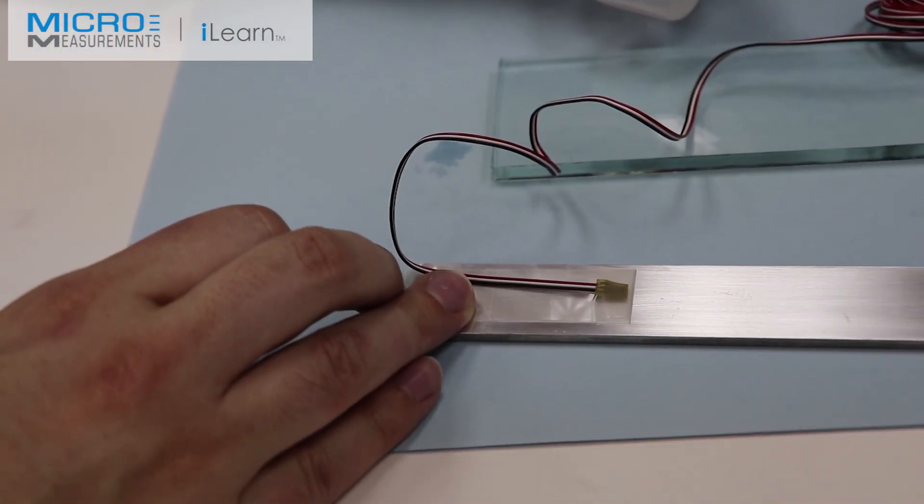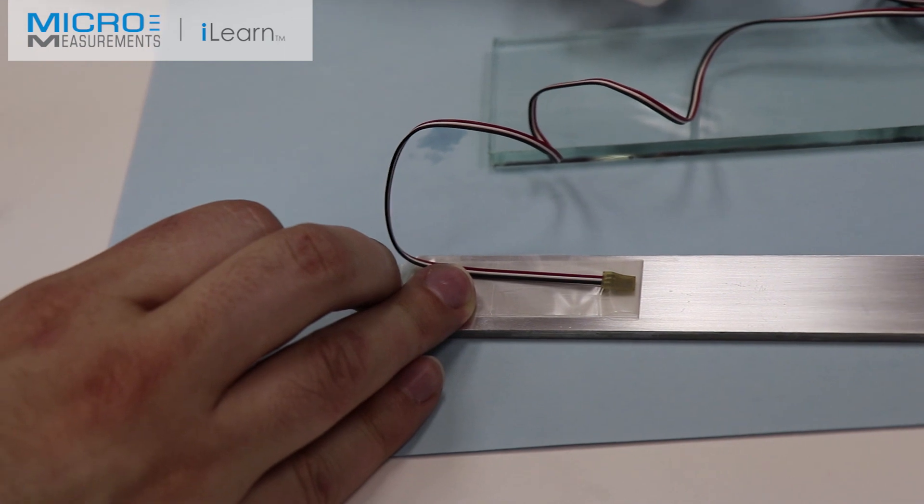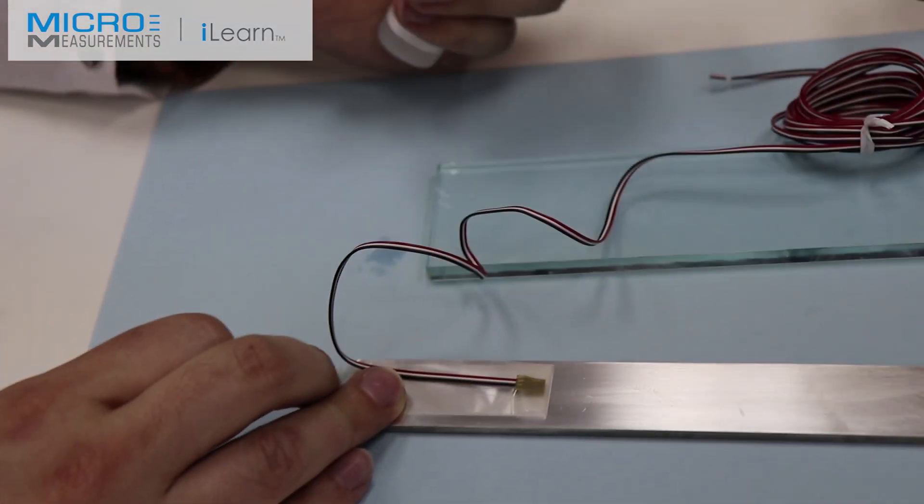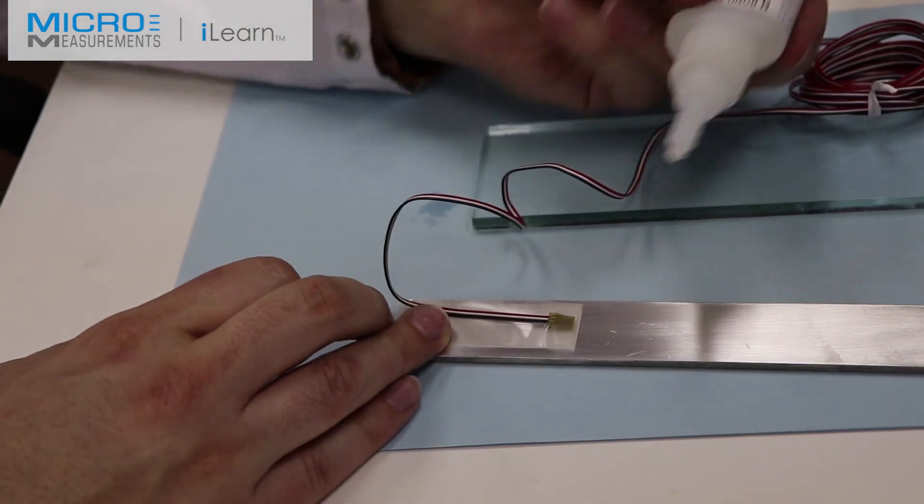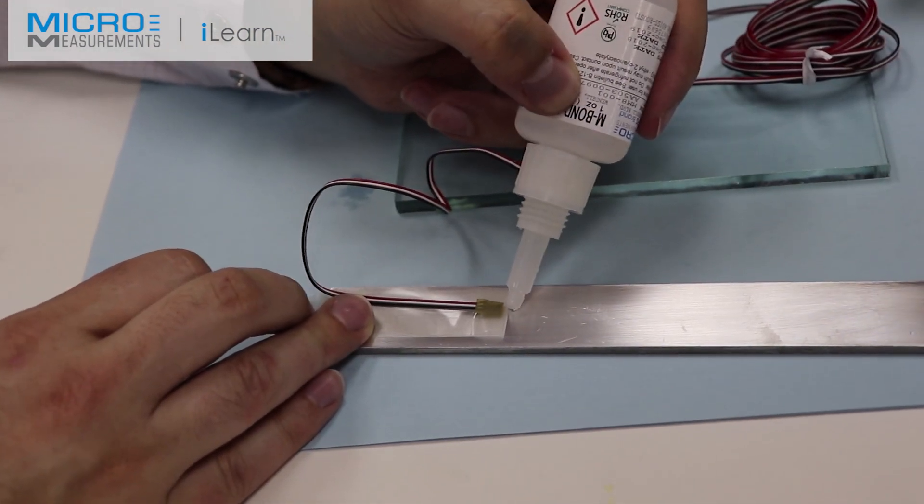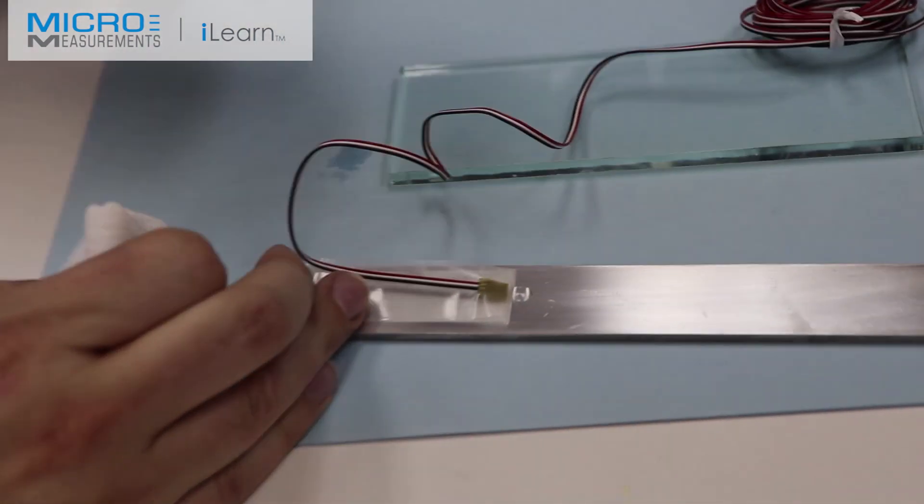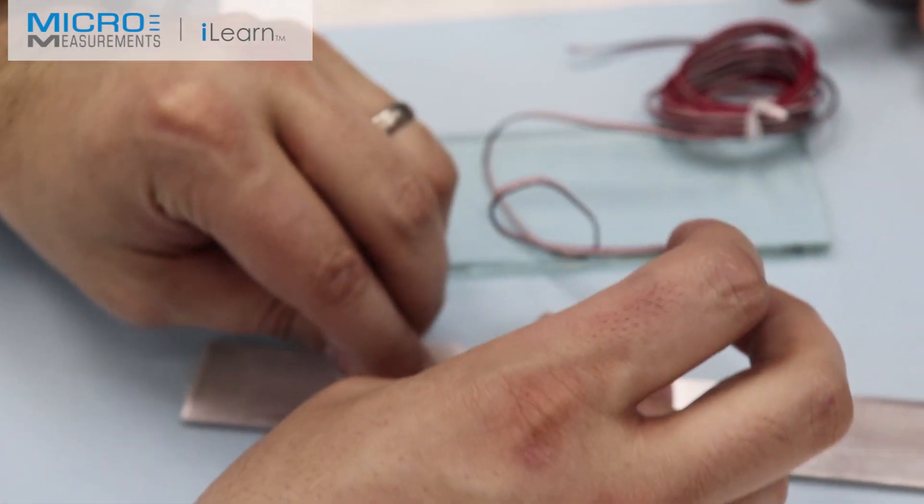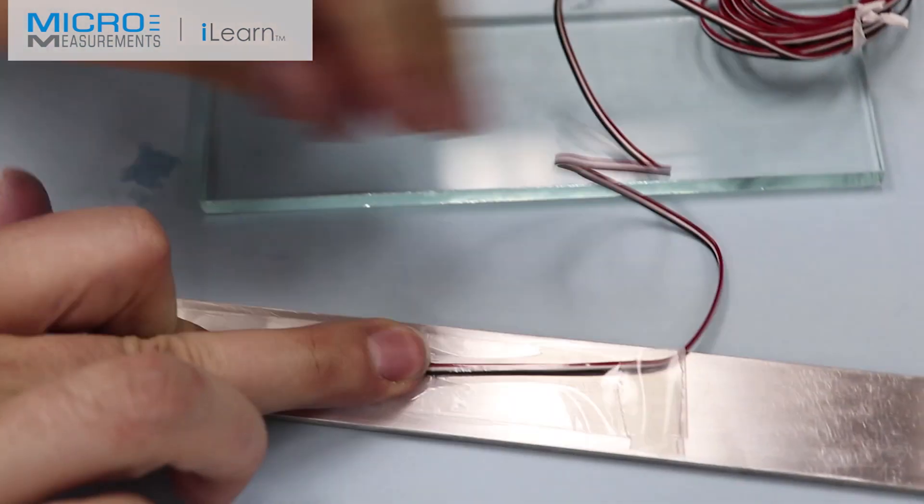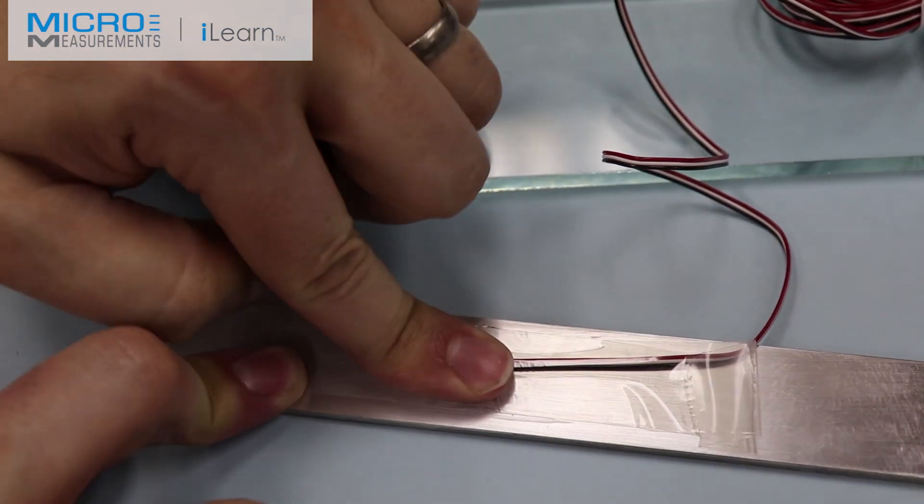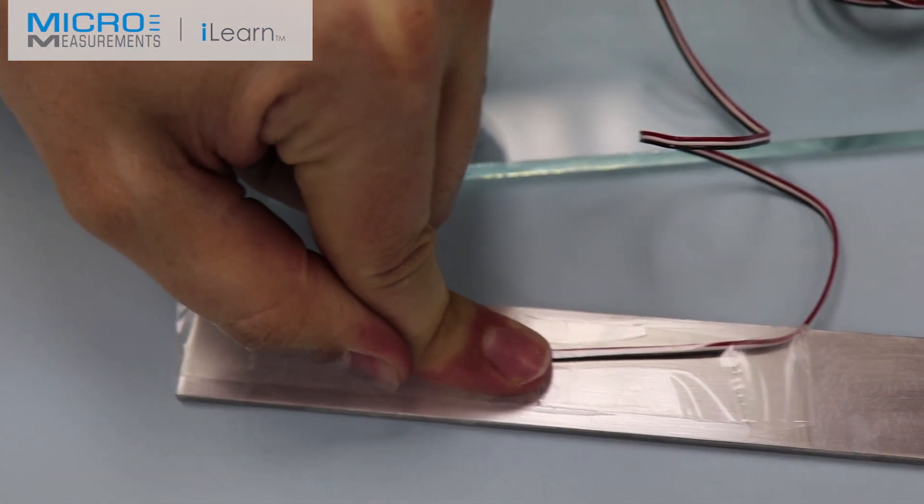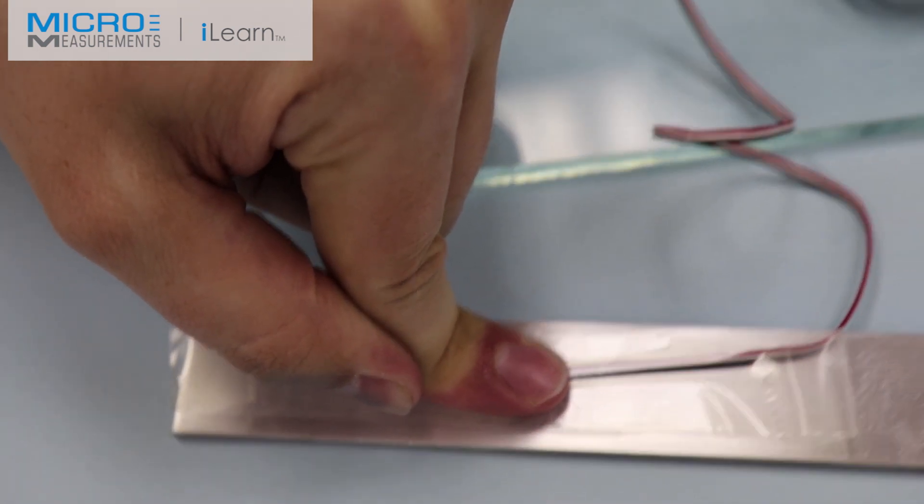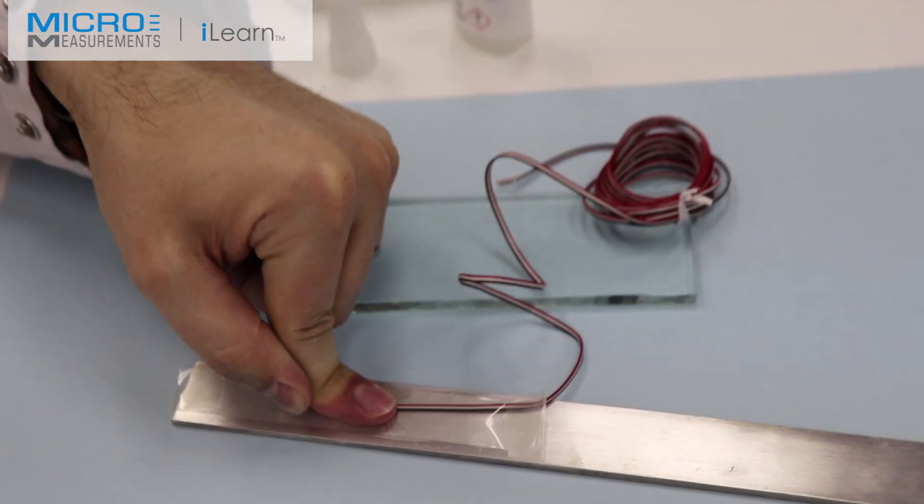We've now finished our one minute of air dry time for the Catalyst C. Colin has the M-Bond 200 adhesive. He's going to take the cap off. He has a gauze sponge folded and ready at the quarters. Going to put a single drop of adhesive there at the cusp of the tape and the gauge. He'll pull it taut and then squeegee right through. And then follow with his thumb or in this case his forefinger. He'll hold it for one minute of thumb pressure or finger pressure in this case.